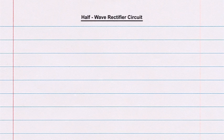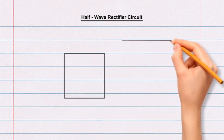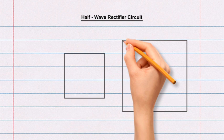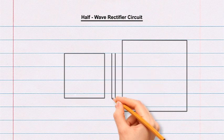Half-Wave Rectifier Circuit. Draw two rectangles placed beside each other. The first rectangle must be slightly smaller than the second. Draw two parallel lines between the two rectangles.